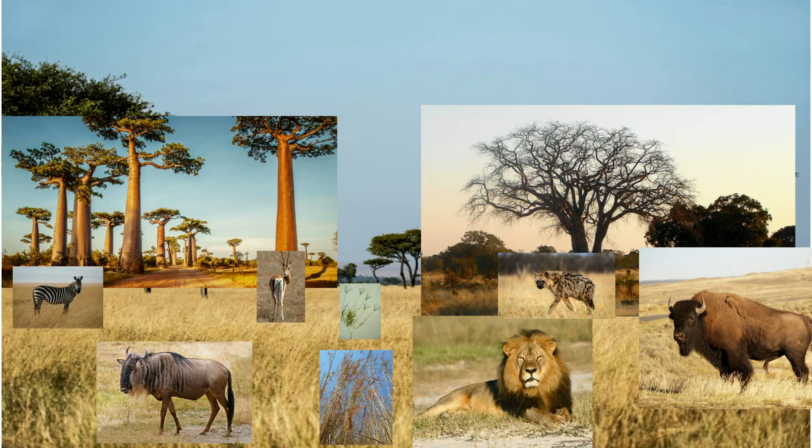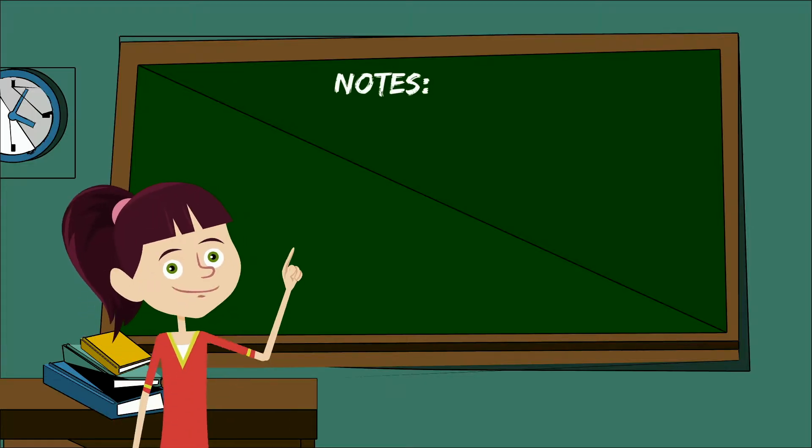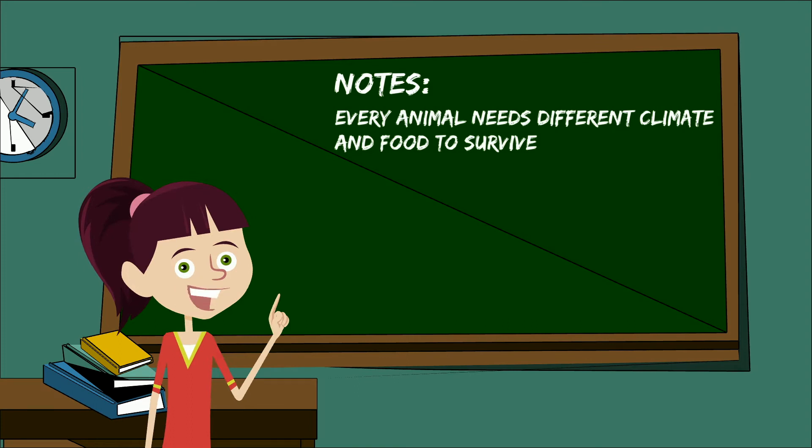When you compare the types of animals that live in these two places, you would notice that they are very different. Why don't you see a red-eyed frog in the African plains? Well, every animal needs different climate and food to survive. These places give the animals their own resources.